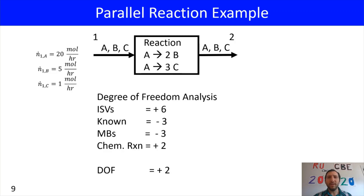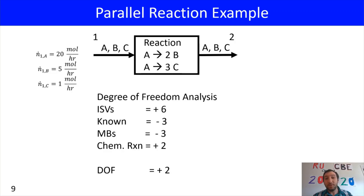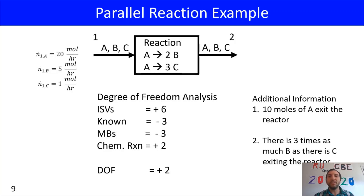We have two degrees of freedom, so we need additional information. The additional information provided: 10 moles of A exit the reactor, and there is three times as much B as C exiting the reactor. With those two pieces of information, we can reduce our degrees of freedom down to zero.